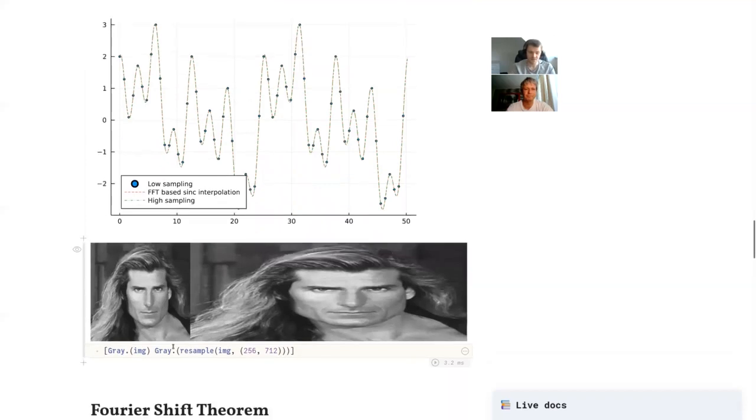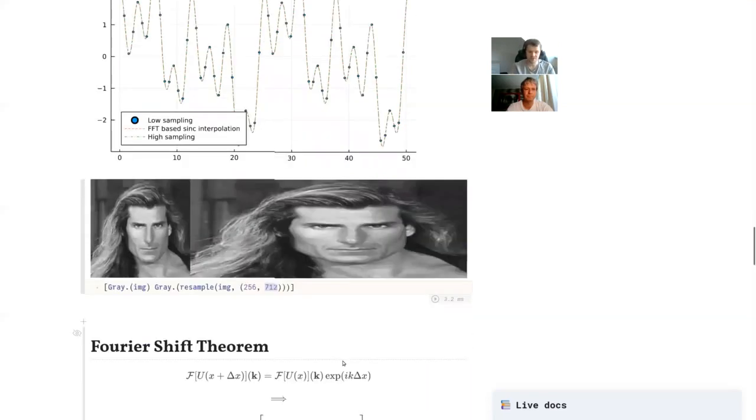This sinc interpolation also works for images. So for example, on the left-hand side, you see the normal image. And then on the right-hand side, we can do a resampling where we just increase the second dimension with 712 samples. So we stretch it along. So there is no new information in this image. It's just a reevaluation of the Fourier series.